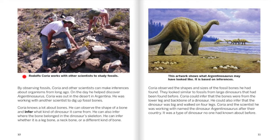Rodolfo Correa works with other scientists to study fossils. By observing fossils, Correa and other scientists can make inferences about organisms from long ago. On the day he helped discover Argentinosaurus, Correa was out in the desert in Argentina, working with another scientist to dig up fossil bones. Correa knows a lot about bones — he can observe the shape of a bone and infer what kind of dinosaur it came from, where the bone belonged in the skeleton, and whether it's a leg bone, a neck bone, or a different kind of bone.